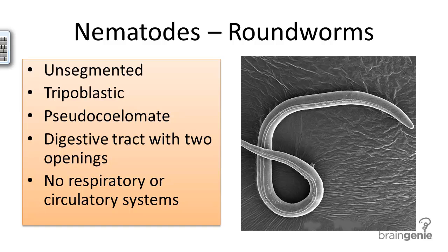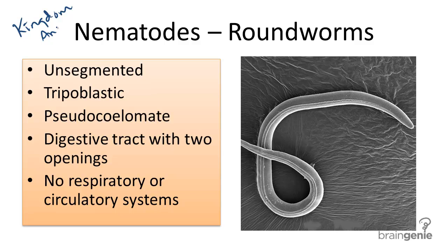One phylum in the animal kingdom contains roundworms. This phylum is called nematoda. Nematodes can be characterized according to the following characteristics.